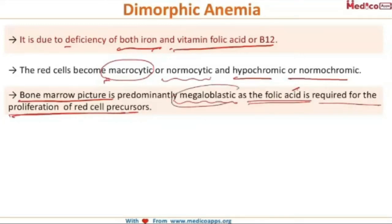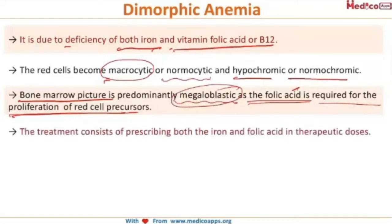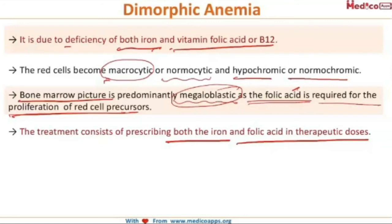The treatment consists of prescribing both iron and folic acid in therapeutic doses. This covers the two basic forms of anemia — iron deficiency anemia and dimorphic anemia — which are commonly seen in our country. Thank you.